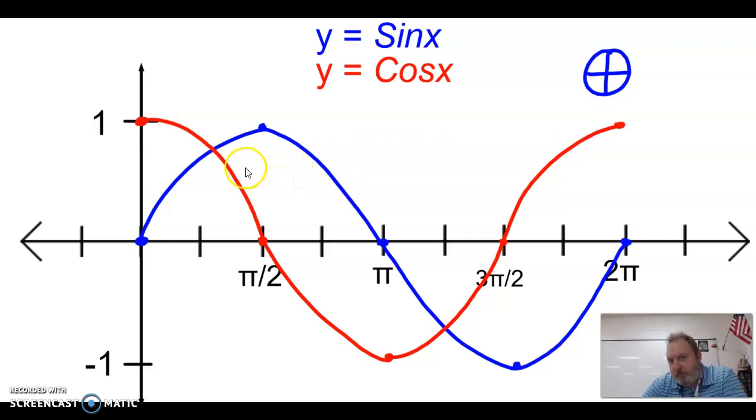And what you'll notice, they're really just transformations of each other. I could take this cosine wave, and if I slide it over π/2 units, it would mimic this sine wave exactly. So these are the two curves that we are going to refer back to today when we graph.